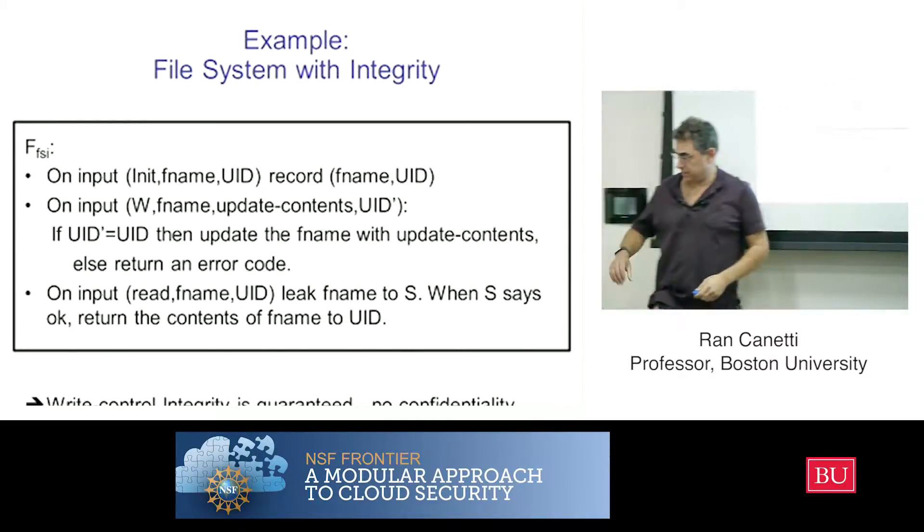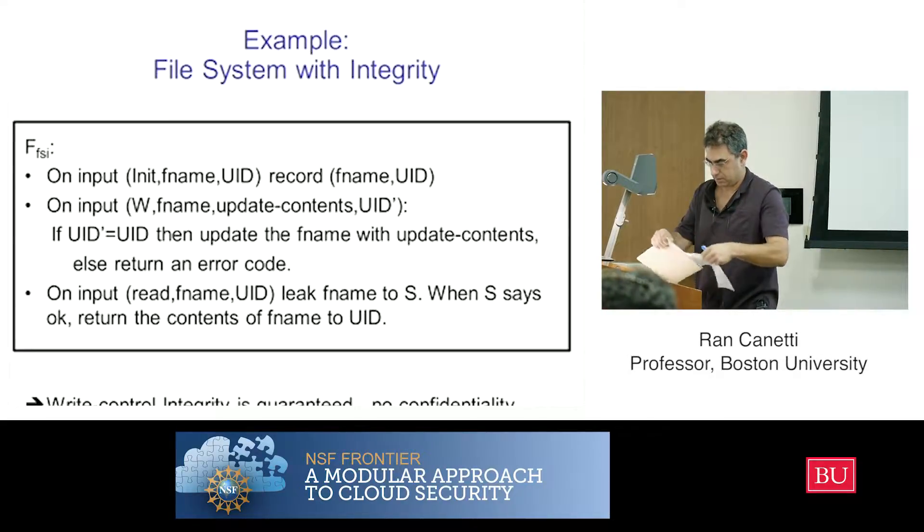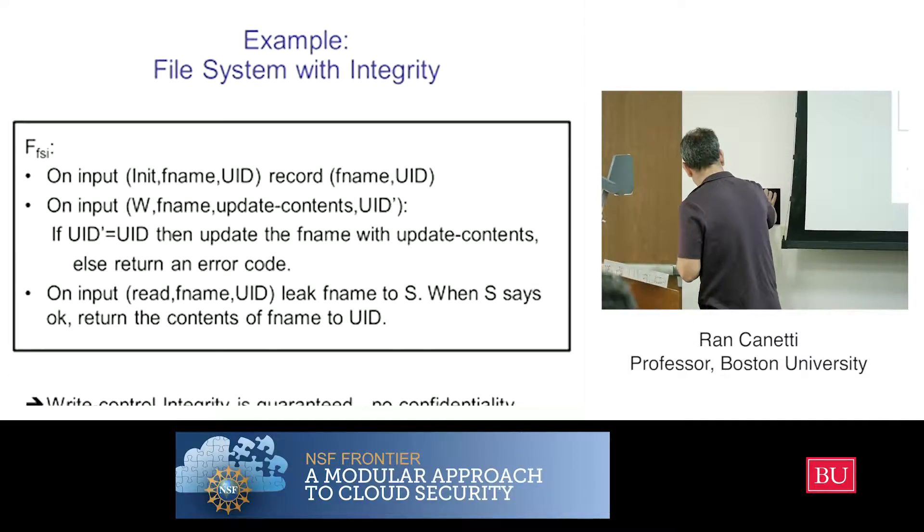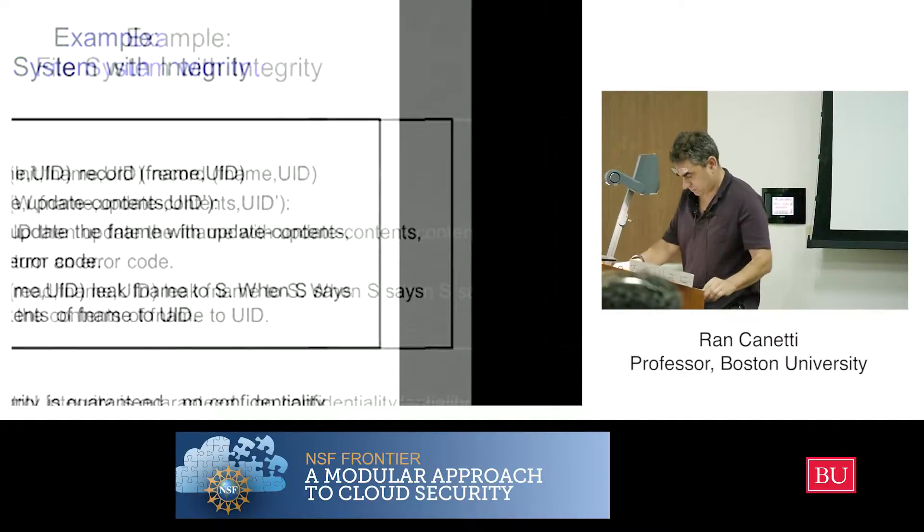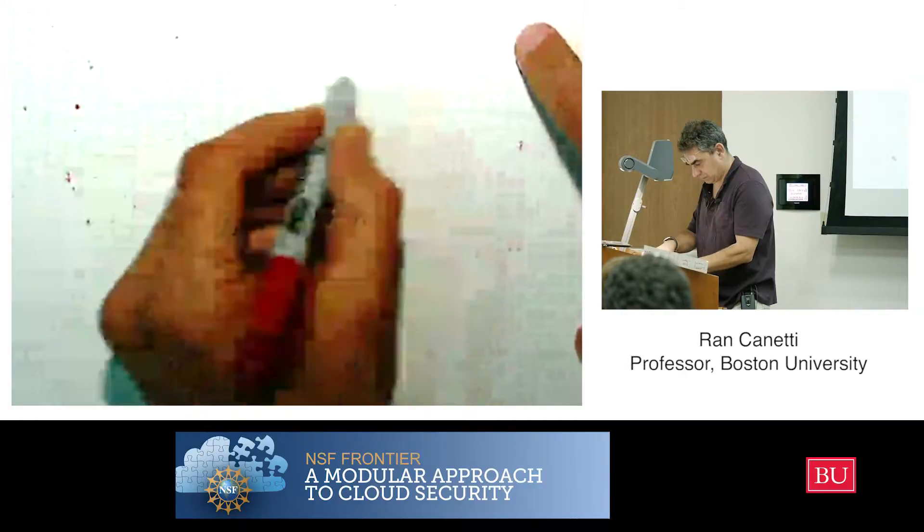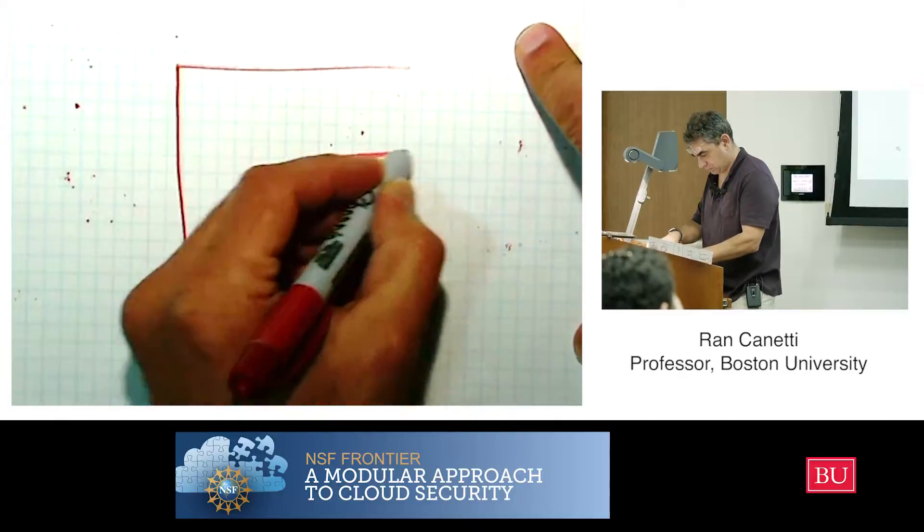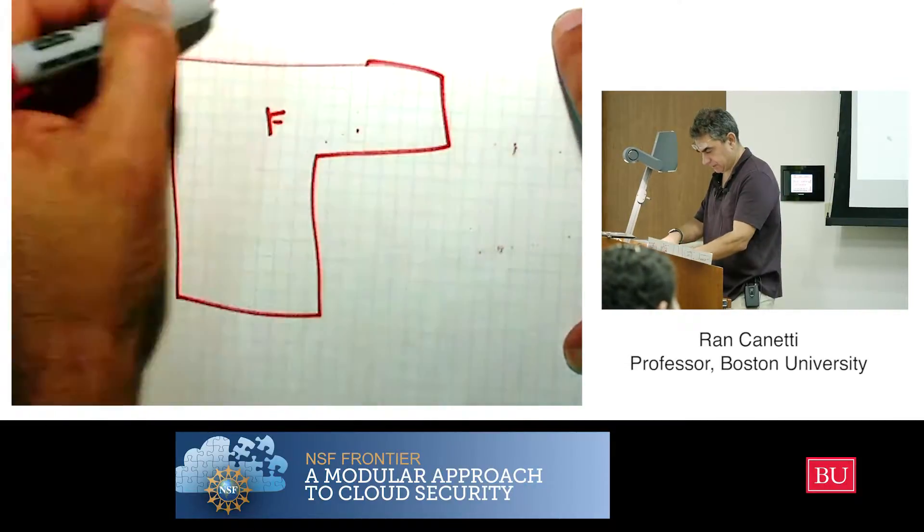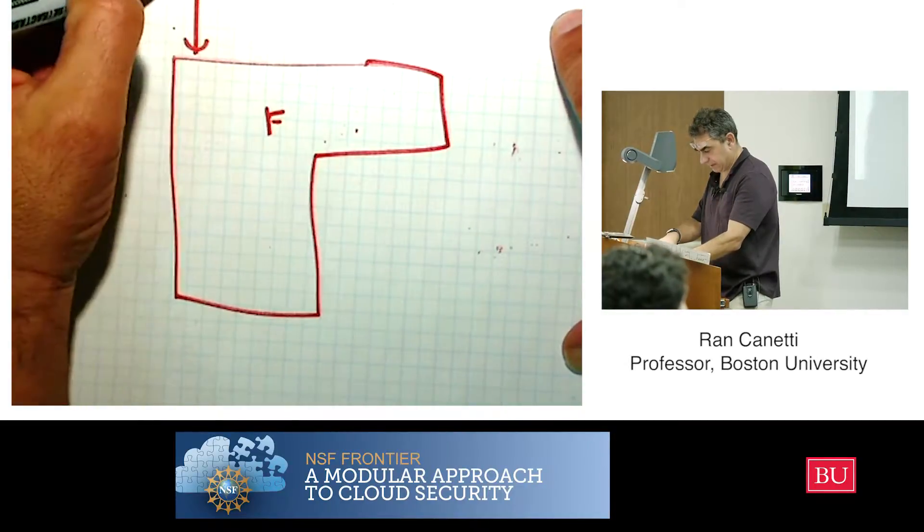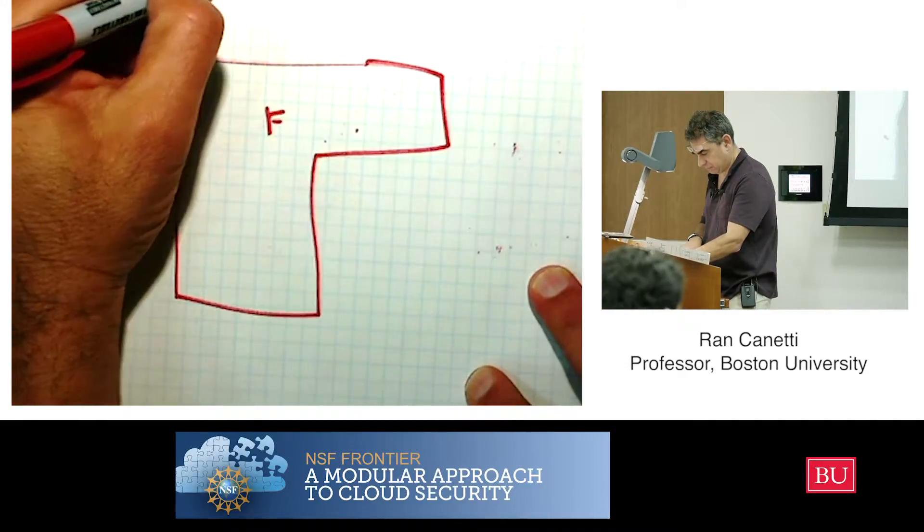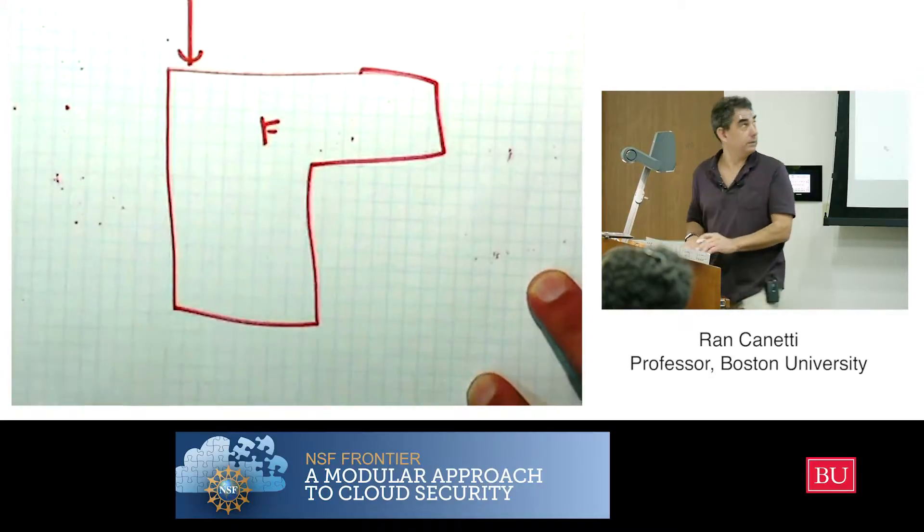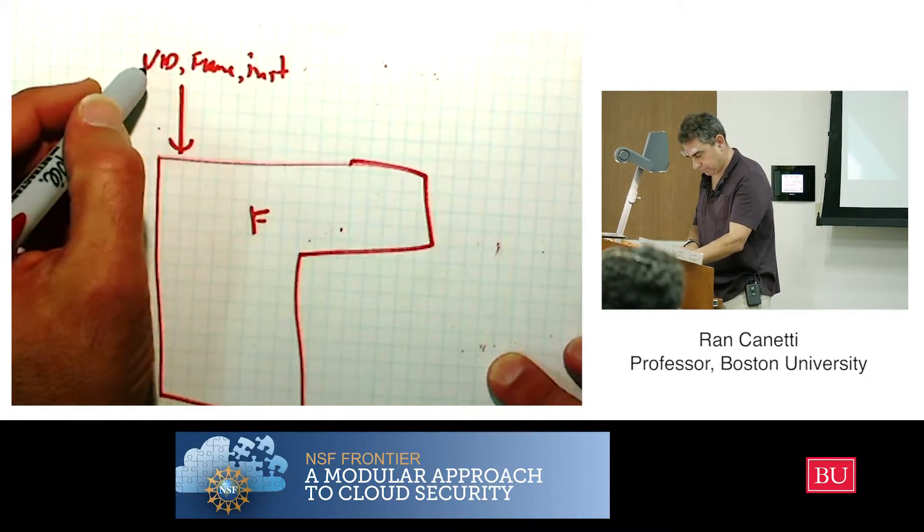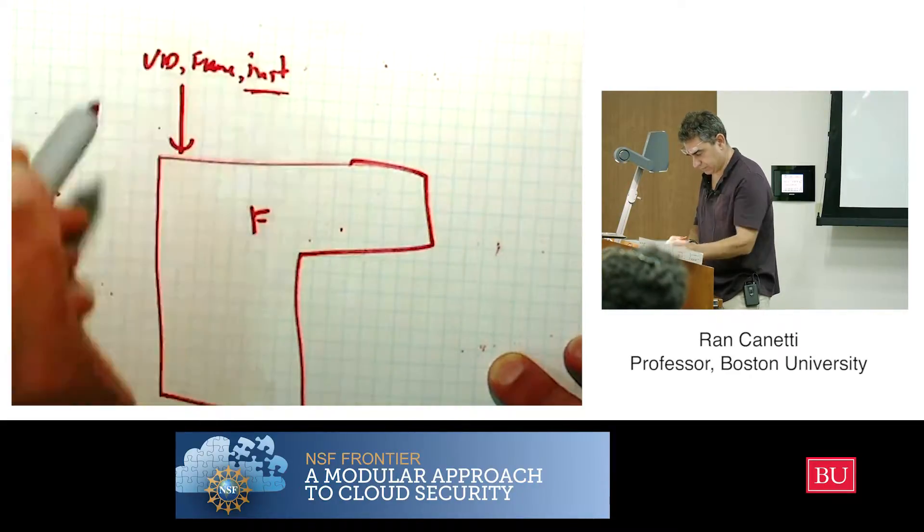So now let me draw it. This takes time. So this is my F. So if I get this, when I get here, I get an input, which is UID, F name, init. I am going to UID, init. Maybe init should be first.